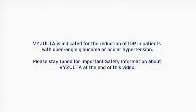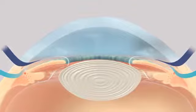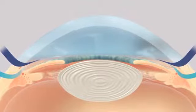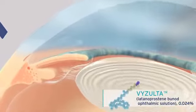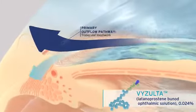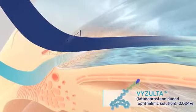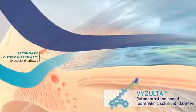Visalta, latanoprostine bunad ophthalmic solution 0.024%, is indicated for the reduction of IOP in patients with open-angle glaucoma or ocular hypertension. Visalta is thought to lower IOP by its dual mechanism of action, increasing outflow through both the trabecular meshwork, the eye's primary outflow pathway, and the uveoscleral pathway.